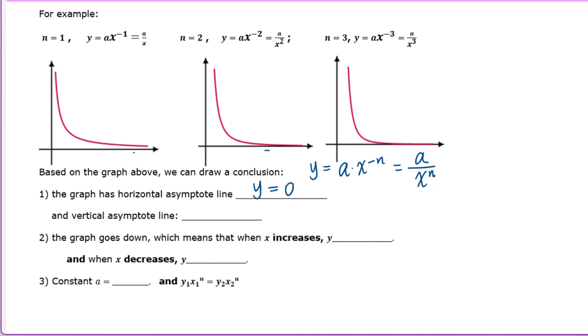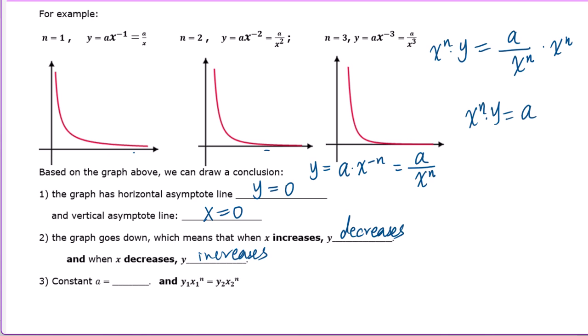The graph also has a vertical asymptote line x equals 0. The graph goes down, which means when x increases, y decreases, and when x decreases, y increases. The constant A equals x to the nth power times y. Also, y1 times x1 to the nth power equals y2 times x2 to the nth power, because both equal the constant A.